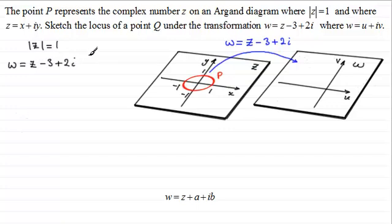Now what I'm going to do next is add 3 and subtract 2i from both sides. Therefore, we get w plus 3 minus 2i equals z. And if I take the modulus of both sides, we've got the modulus of w, and I'm also going to change this.